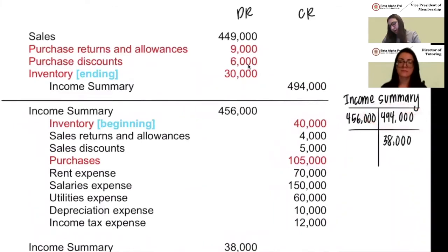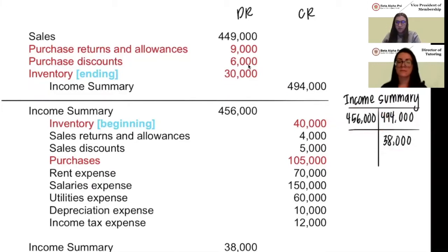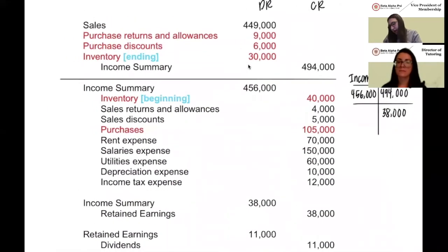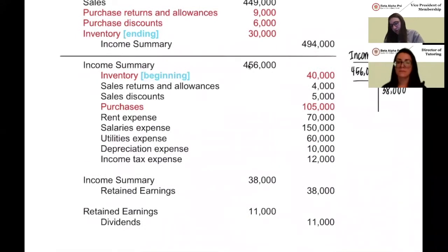Now when we look at our income summary, we have a credit of $494,000 and a debit of $456,000, which means our income summary has a credit balance of $38,000. The income summary is also a temporary account, so we need to close it into retained earnings. Since it has a credit balance, we debit it $38,000 and credit retained earnings $38,000.